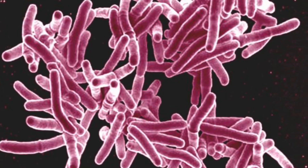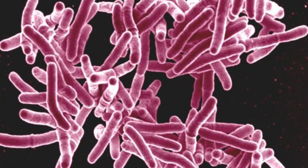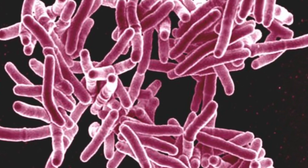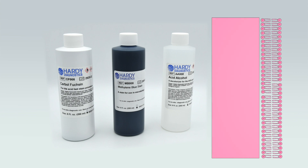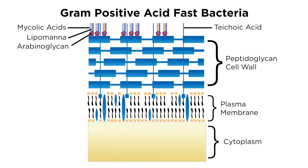The brilliance of the red colorization is due to the retention of the carbofuchsin dye within the cell wall of an acid-fast organism. The waxy mycolic acids that make acid-fast organisms traditionally challenging to stain also prevent decolorization.